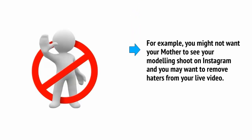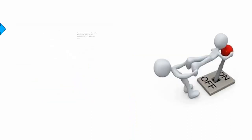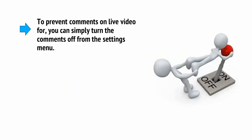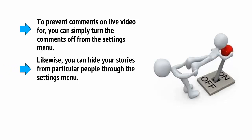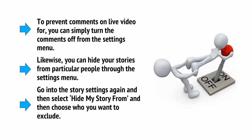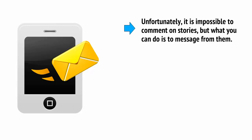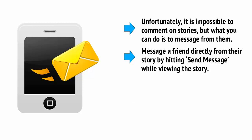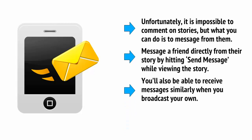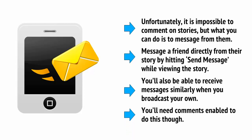Security and privacy is always important, even when you are a marketer and your aim is to reach as many people as possible. For example, you might not want your mother to see your modelling shoot on Instagram, and you may want to remove haters from your live video. Instagram has thought of both of these things. To prevent comments on live video, you can simply turn the comments off from the settings menu. Likewise, you can hide your stories from particular people through the settings menu — go into the story settings and select hide my story from, then choose who you want to exclude. It is impossible to comment on stories directly, but what you can do is message from them. Message a friend directly from their story by hitting send message while viewing the story. You'll also be able to receive messages similarly when you broadcast your own, but you'll need comments enabled to do this.